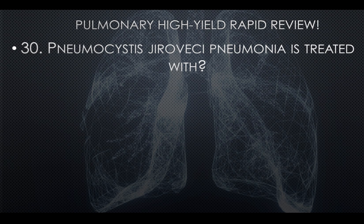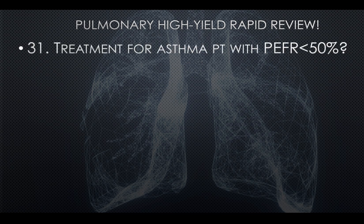Question twenty-eight: Pneumocystis jirovecii pneumonia (PJP) is treated with Bactrim (TMP-SMX). In the question stem, this will likely be a patient with a history of AIDS presenting with lung issues pointing to pneumonia. Question twenty-nine: For asthma patients with PFR less than 50, admit the patient. If PFR is less than 50, these patients should be admitted.